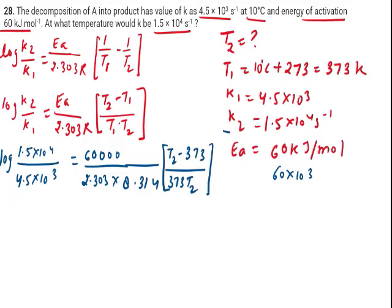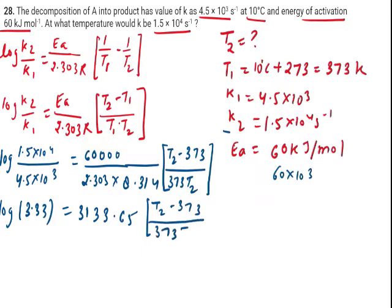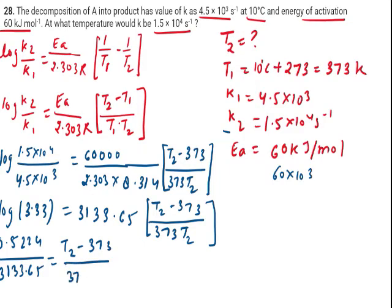By dividing this whole term we will get 3133.65. So it becomes T2 minus 373.